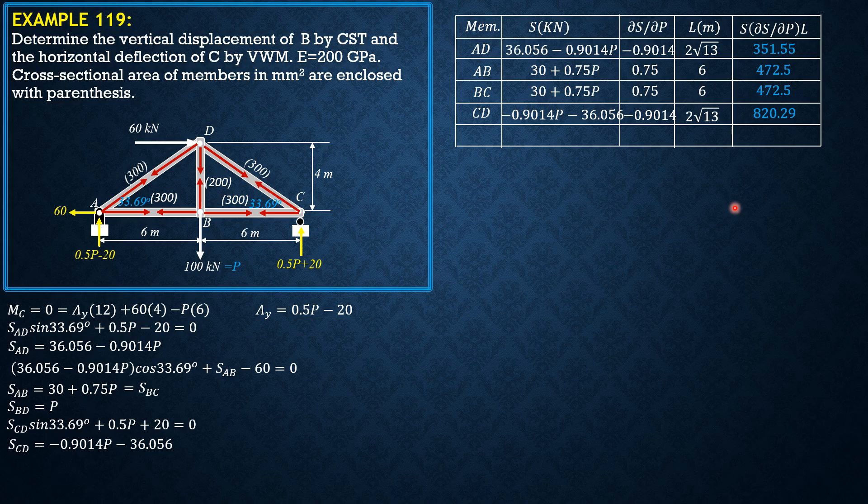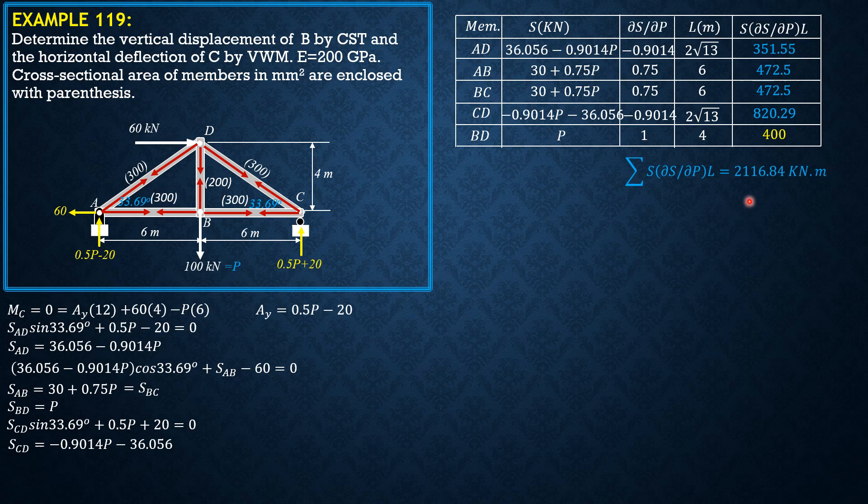And finally for member BD, it is just P. Take note P is 100, partial derivative is 1, length is 4, so 100 times 1 times 4 is 400. So just sum up summation of S partial of S with respect to P length for this blue colored entries.